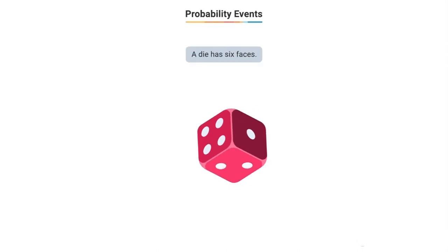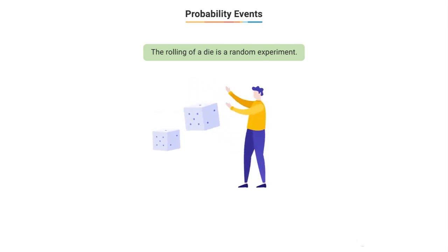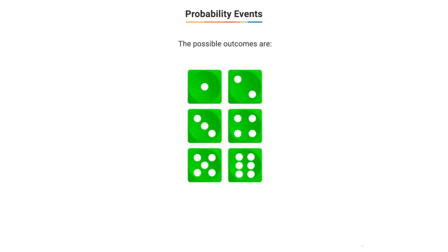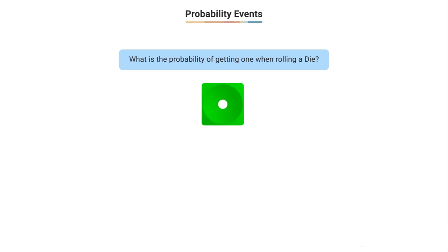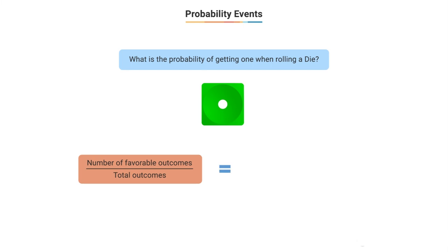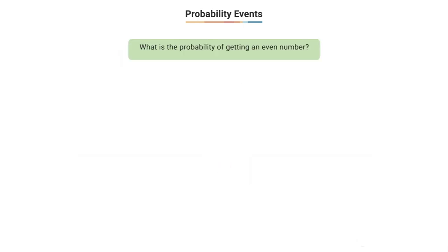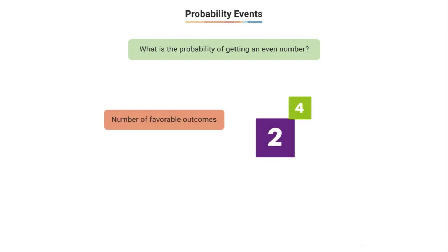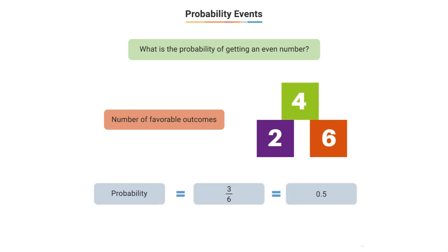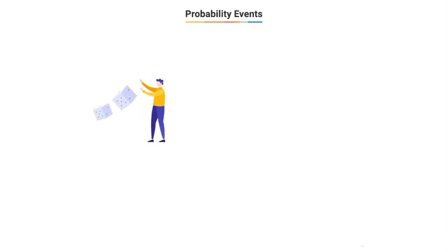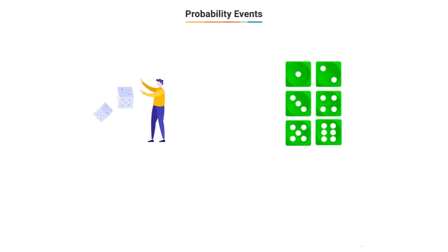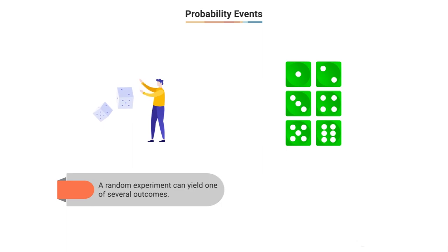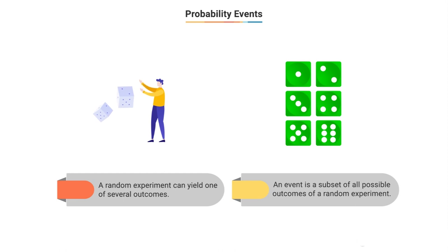Consider rolling a die with 6 faces. The random experiment is rolling the die. The possible outcomes are 1, 2, 3, 4, 5, or 6, so the sample space Ω = {1, 2, 3, 4, 5, 6}. The probability of getting 1 is: number of favourable outcomes / total outcomes = 1/6. The probability of getting an even number has 3 favourable outcomes (2, 4, or 6), so the probability is 3/6 = 0.5. A random experiment is a process that leads to one of several possible outcomes, and an event is just a subset of all possible outcomes of a random experiment.